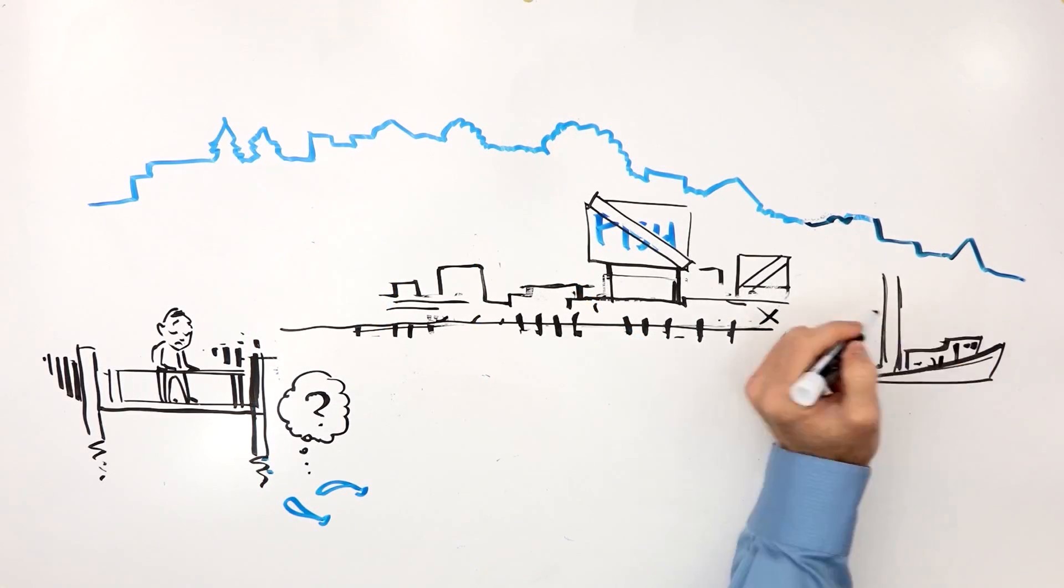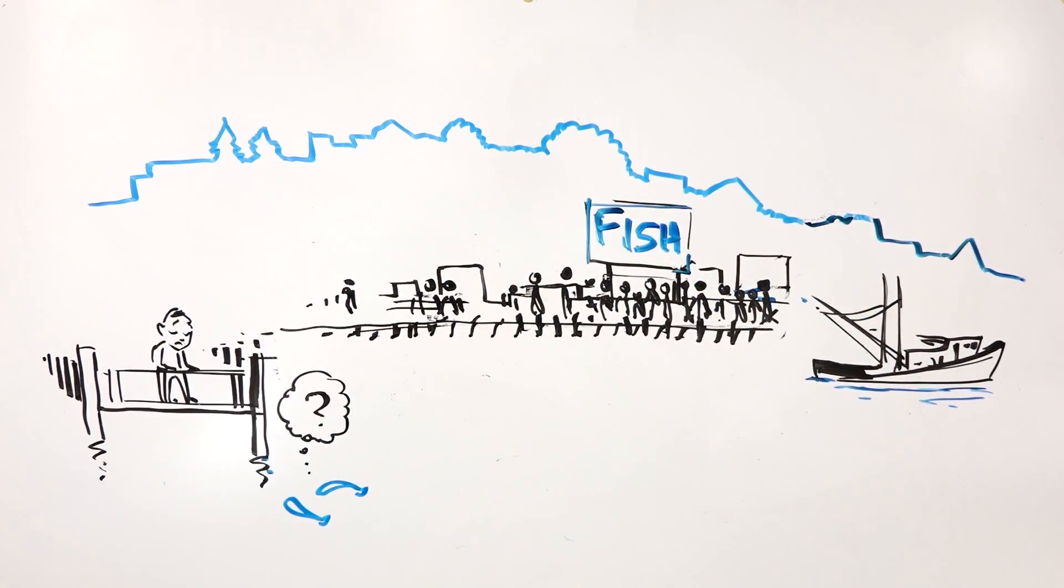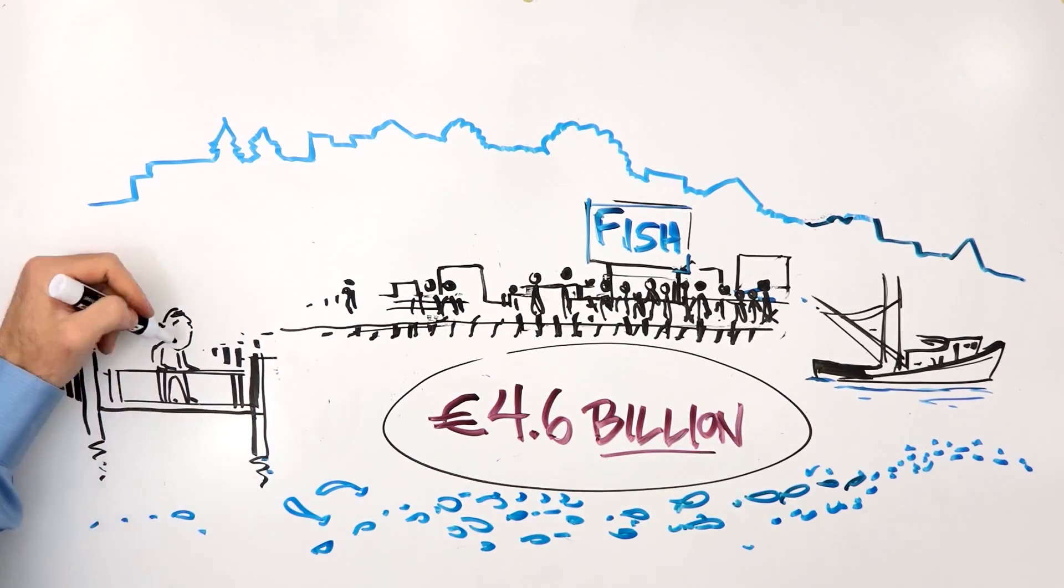Experts estimate that ending overfishing in the Northeast Atlantic alone could generate an additional 4.6 billion euro of annual revenue and more jobs in the fishing sector.